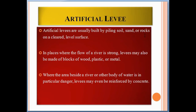Artificial levees are usually built by piling soil, sand, or rocks on a cleared or level surface. In places where the flow of the river is strong, levees may also be made of blocks of wood, plastic, or metal. Where the area beside a river or other body of water is in particular danger, levees may even be reinforced by concrete.